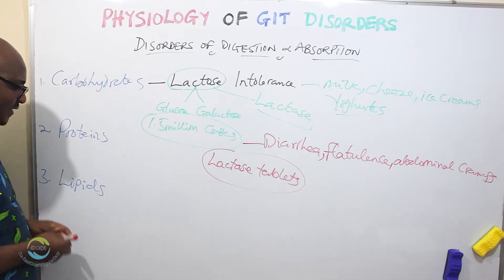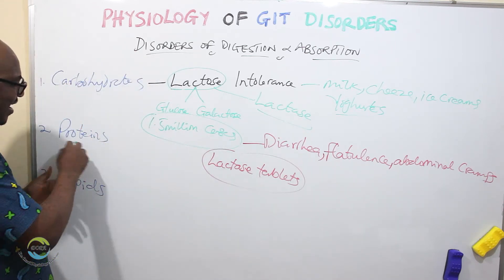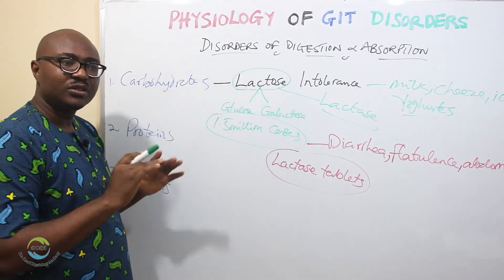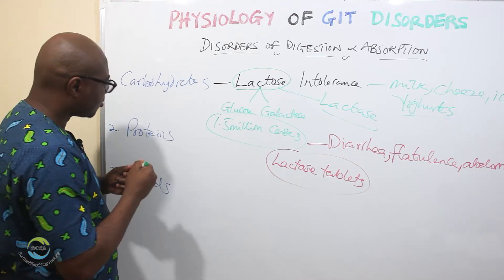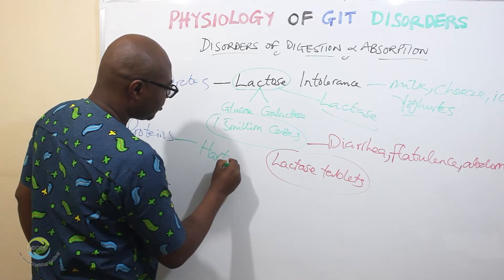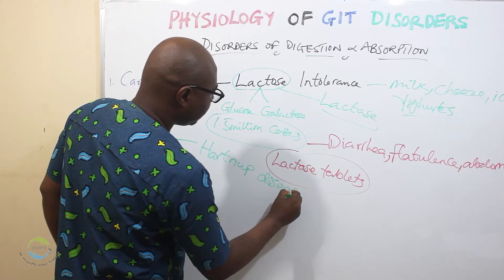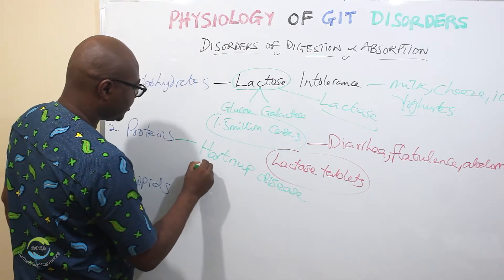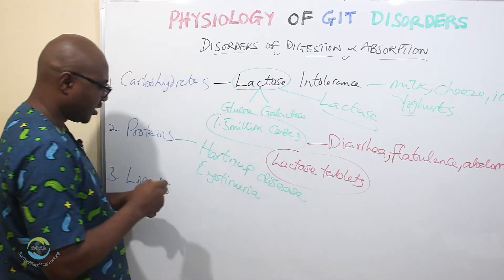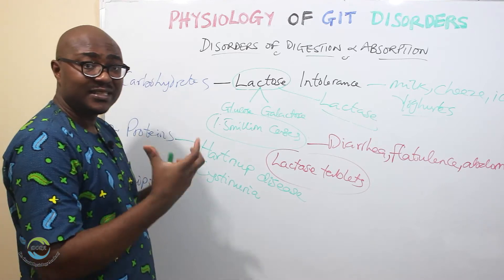Then proteins — you don't really have many disorders arising from protein digestion and absorption; they are rare. The common ones are known as Hartnup disease and cystinuria. These are genetic disorders — autosomal recessive, meaning it's something you need to inherit from your parents.